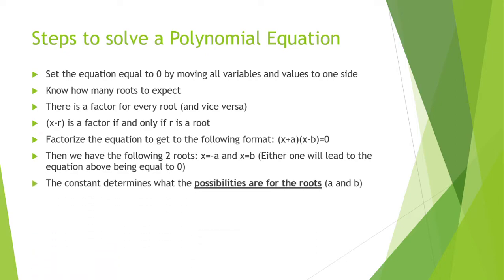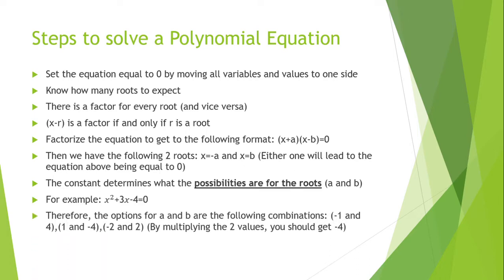The constant determines what the possibilities are for the roots. For example, x squared plus 3x minus 4 equals 0. We have two possible combinations for a and b. The first combination is negative 1 and 4, then 1 and negative 4, negative 2 and 2. These are the factors of the constant which is negative 4. So by multiplying these two values, you should get to minus 4.